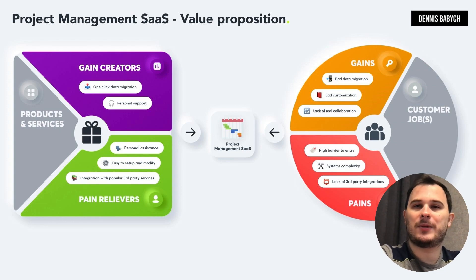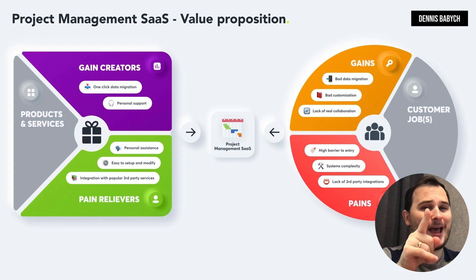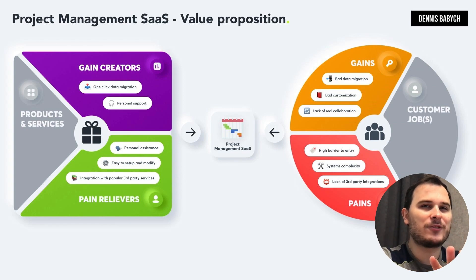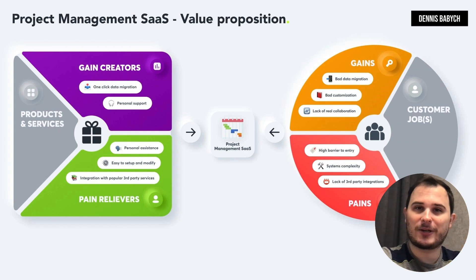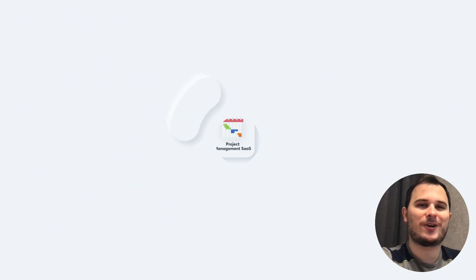When you prioritize the platform value for your audience and keep that at the core of everything you do, you're setting up your business for success. Small companies and startups can easily outperform industry leaders by being agile, flexible, and focusing on unique problems and local niches. You don't have to compete with everyone in the market — concentrate on a specific audience and provide them with the best possible value. Always keep in mind that it's crucial to fall in love with your customer problems and not just your solutions.